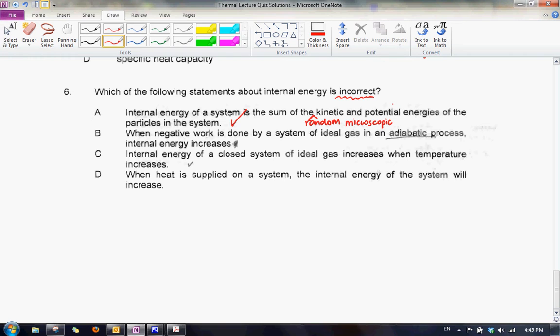For part B, when negative work is done by a system of ideal gas in adiabatic process, internal energy increases. Now to look at this statement, what we need to do is we need to find a relationship that can relate work done with internal energy.